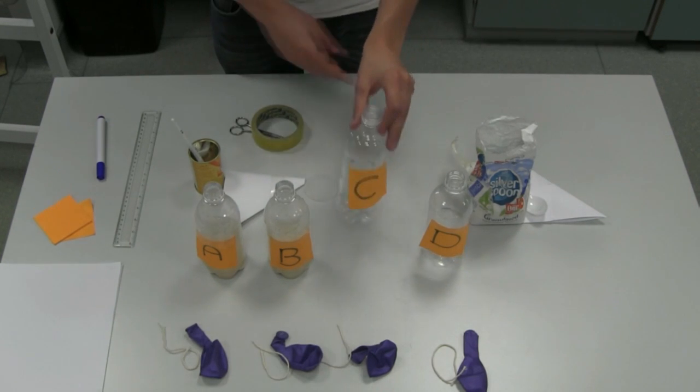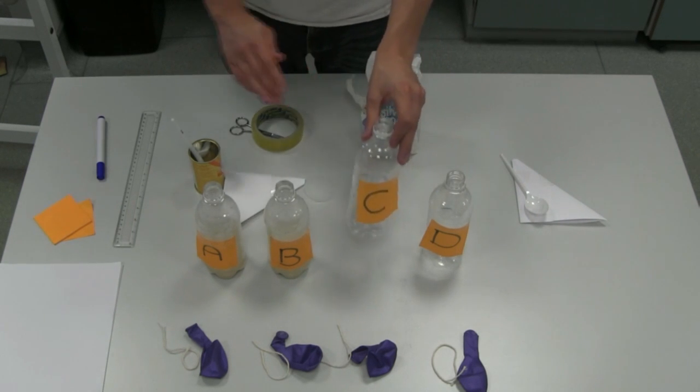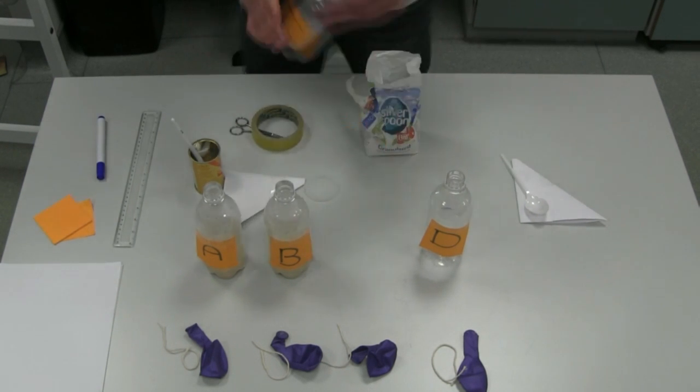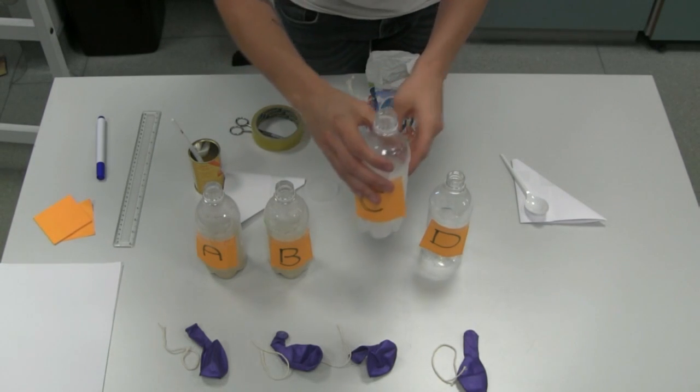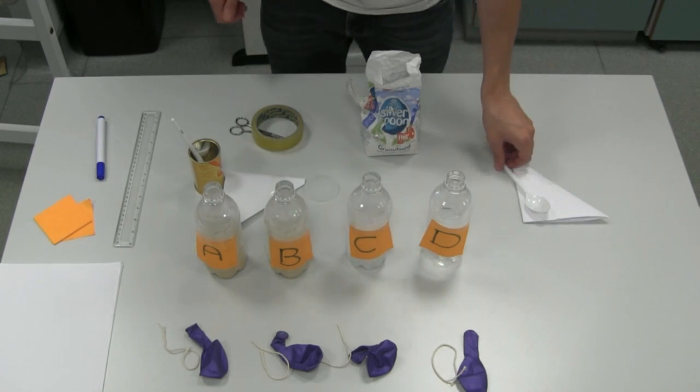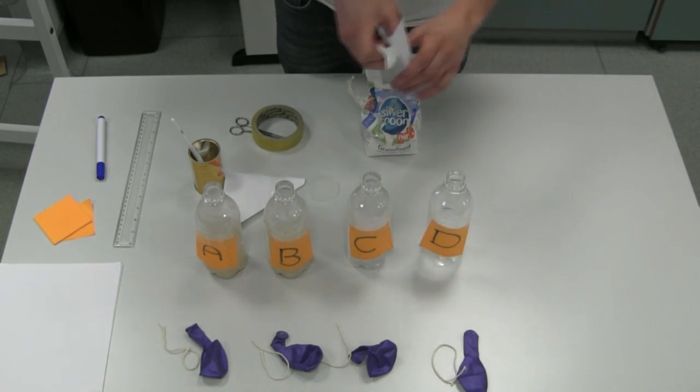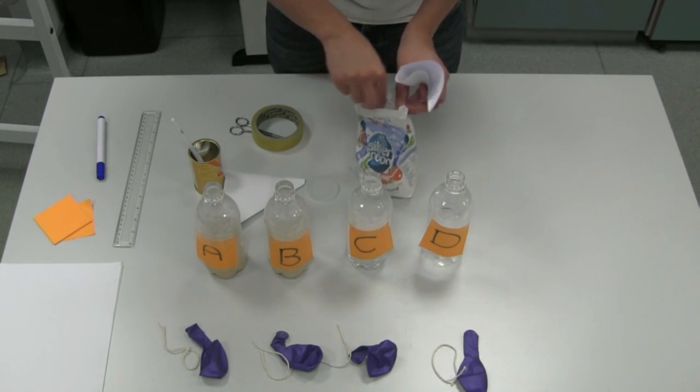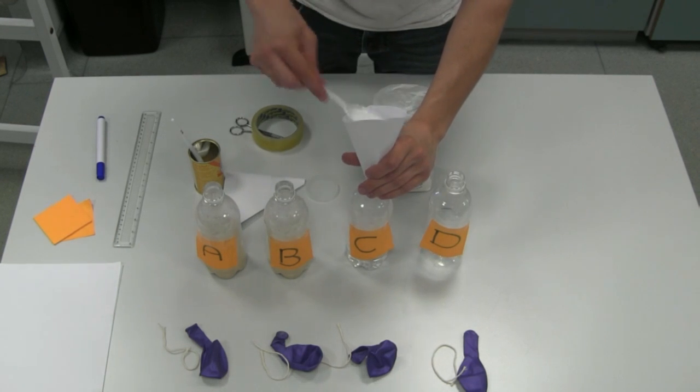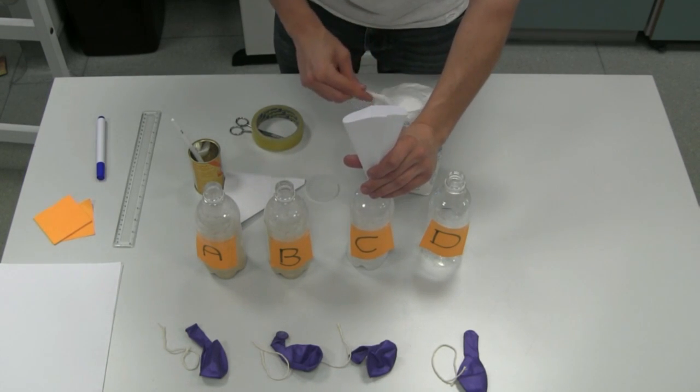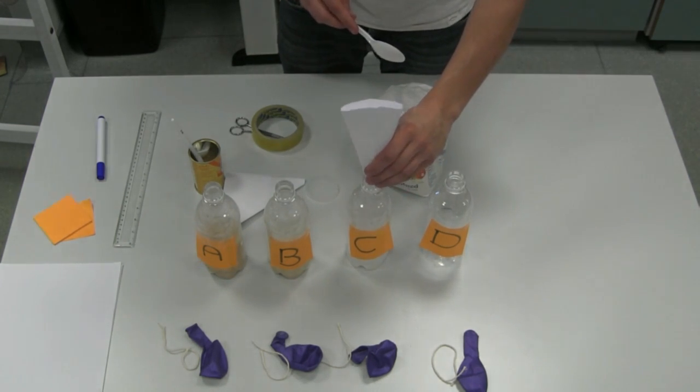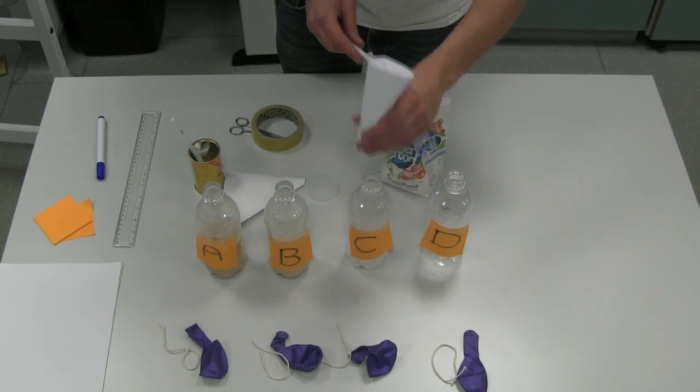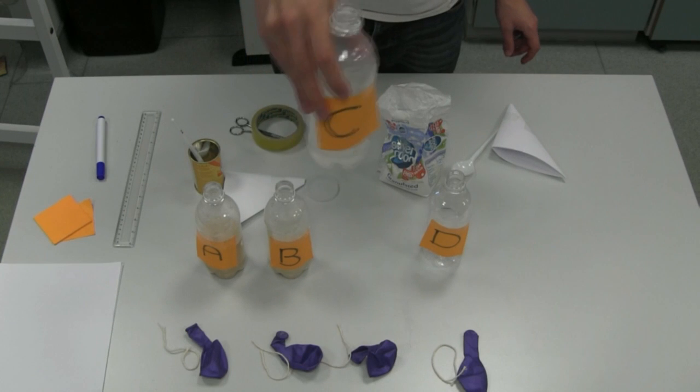With bottle C, we're going to add the sugar and water but with no yeast. So fill with water up to the 7cm mark, and then using the funnel and the spoon for the sugar, add 3 spoons of sugar. Give it a good shake, a good mix.